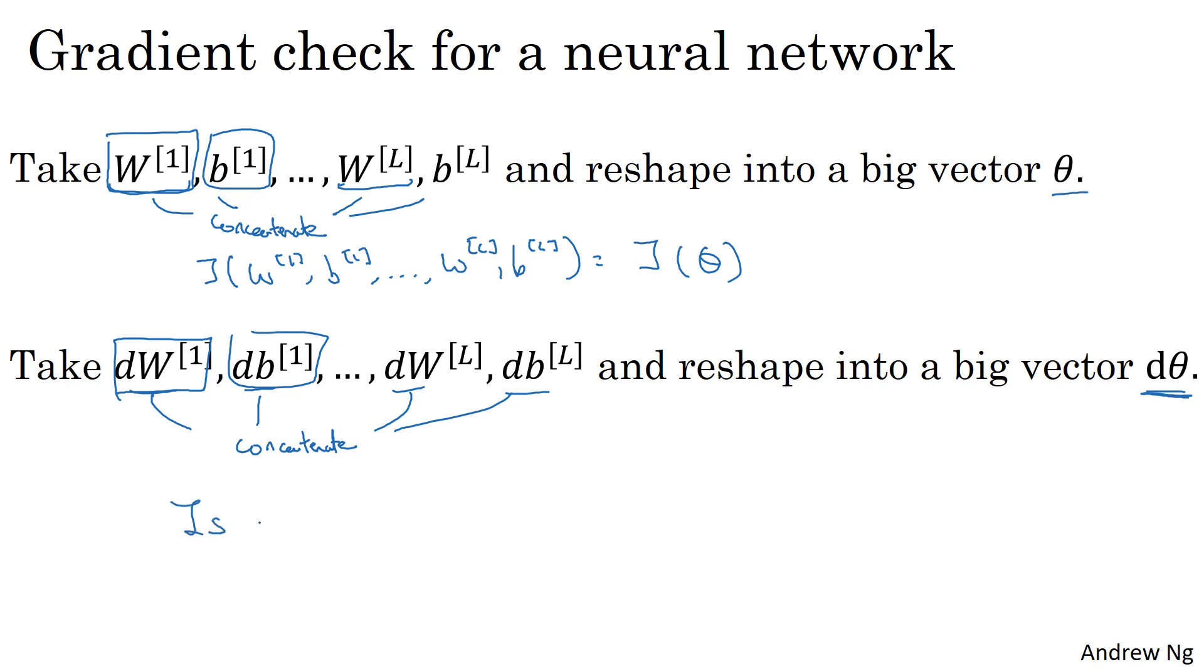So the question is now, is D theta the gradient or the slope of the cost function J? So here's how you implement gradient checking and often abbreviate gradient checking to grad check.